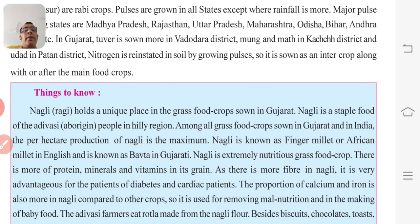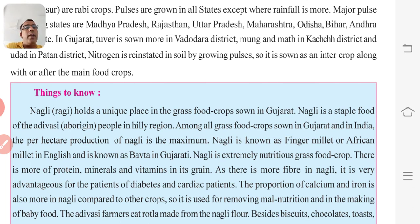It can be asked what is a suitable food for diabetes patients — the answer is Ragi or Nagali. The proportion of calcium and iron is also more in Nagali compared to other crops, so it is used for removing malnutrition and in the making of baby food.